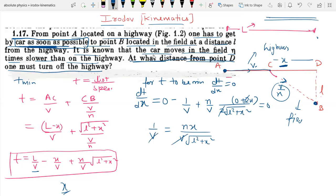Canceling V, we get L square plus X square equals N square X square. So X square times (N square minus 1) equals L square. Therefore, X equals L upon square root of (N square minus 1).